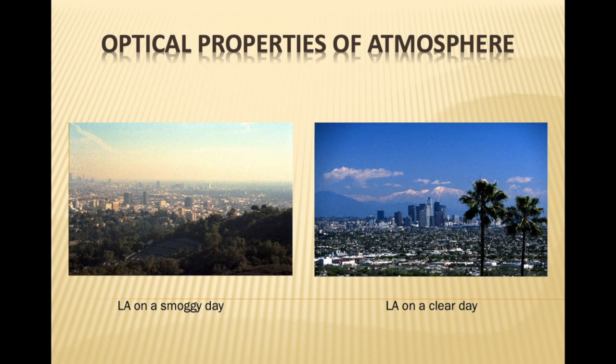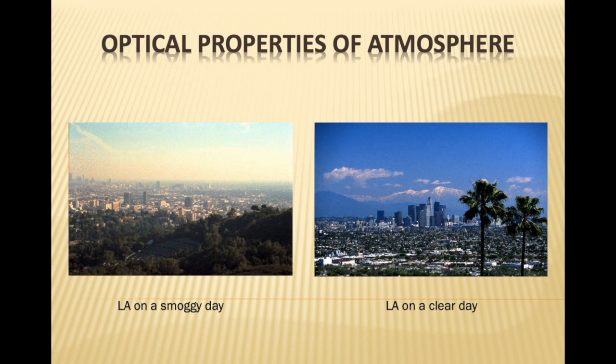Here is an analogy: suppose we are using Google Maps. Sometimes we use the physical map, sometimes the political map showing states and capitals, sometimes the traffic map. All are showing a map of the same place — India — but all are different, each with its own properties and uses, yet all belong to India only.